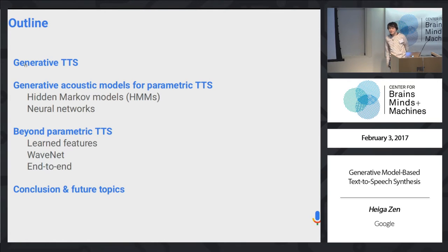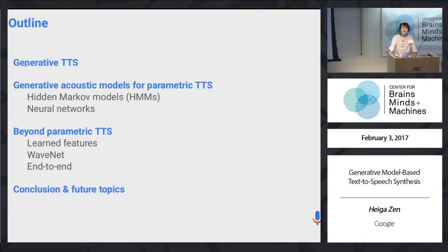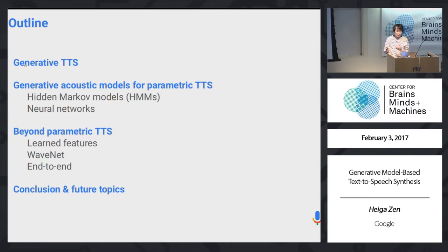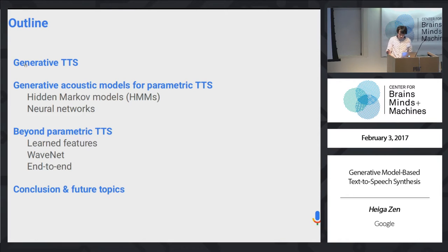First I will talk about some general background of generative model-based text-to-speech synthesis. Then I will talk about conventional methods based on hidden Markov models and neural networks. Then I will talk about beyond parametric TTS, including WaveNet and end-to-end text-to-speech. Finally, I will conclude my presentation and discuss some future research topics.